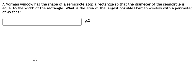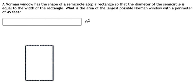Hello everybody. Today I want to show you how to answer a problem: a normal window has the shape of a semicircle atop a rectangle, so that the diameter of the semicircle is equal to the width of the rectangle. What is the area of the largest possible normal window, given that the perimeter is about 45 feet? So we draw this — a rectangle with a semicircle on top.